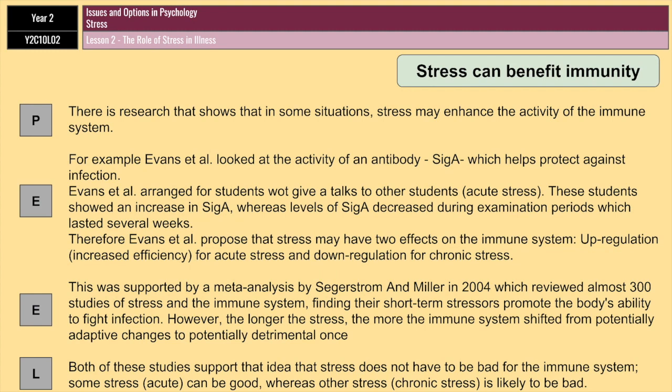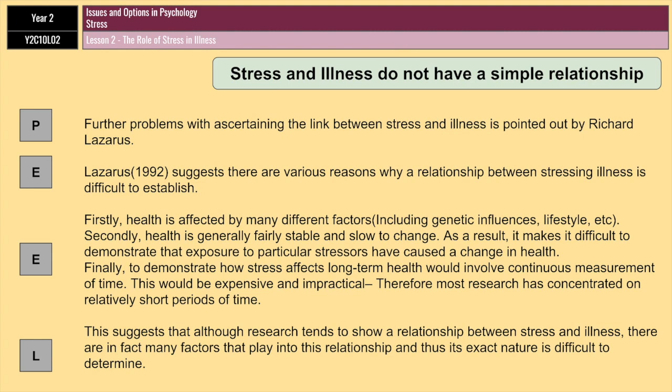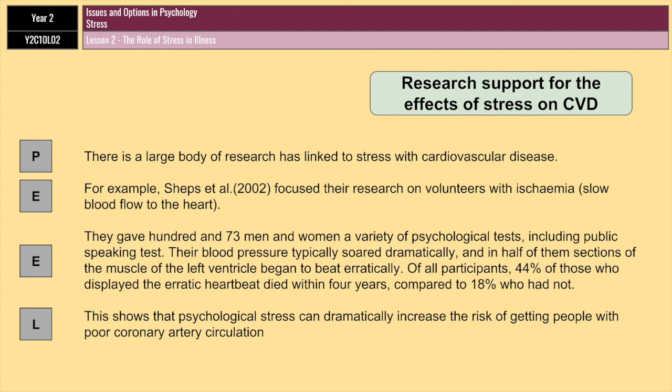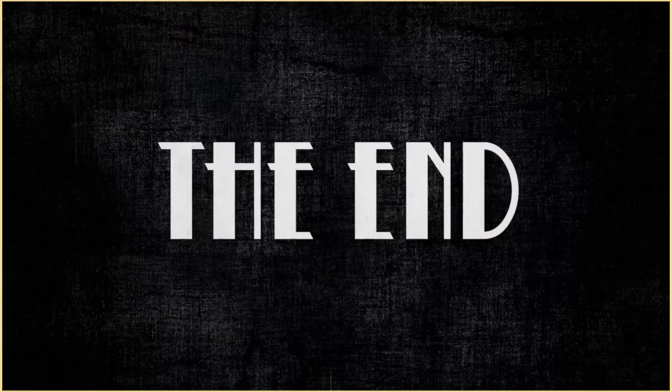The three PEEL evaluation points are: stress can benefit immunity; stress and illness don't have a simple relationship; and research support for the effects of stress on CVD. Feel free to pause and go back at any point, but otherwise that is the end of the video. I hope it's all made sense — thank you very much for listening.